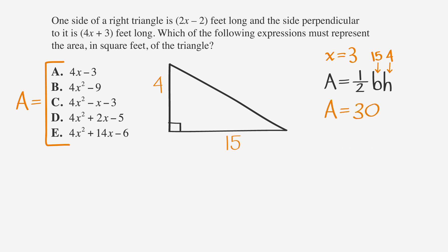Now, let's see which of the answer choices is equal to 30 when we use 3 for x. Let's start with answer choice A. Substituting 3 in for x, we get 12 minus 3, which is 9, not 30. Let's cross out choice A.